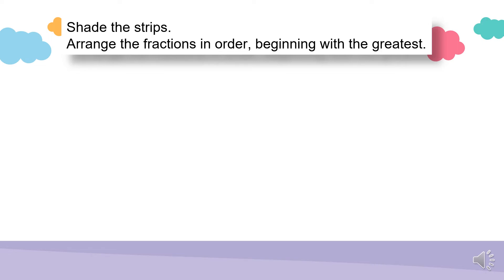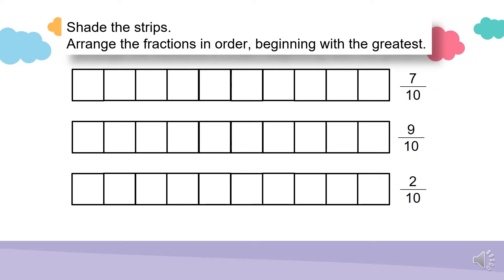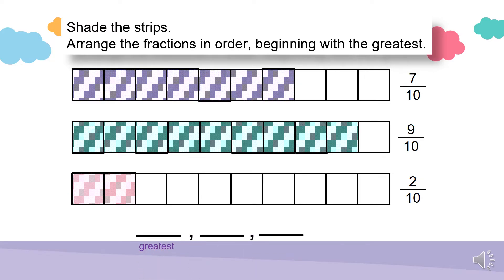Let's compare more fractions with the same denominator. Shade the strips, and then arrange the fractions in descending order, beginning with the greatest. We have 7 tenths, 9 tenths, and 2 tenths. They all have the same denominator, 10, which means each strip is divided into 10 equal parts. For the first strip, 7 parts are shaded. 9 over 10 means 9 parts are shaded. Lastly, 2 over 10 means 2 parts are shaded. Now let's arrange these fractions starting with the greatest — you can see from the fraction strips which one has more shaded parts. 9 over 10 is the greatest fraction.